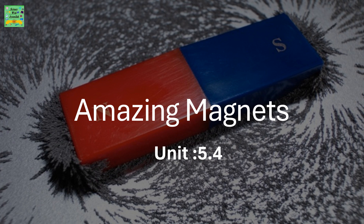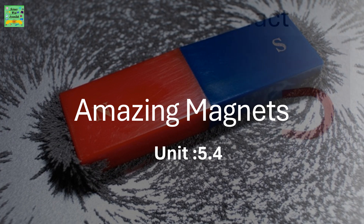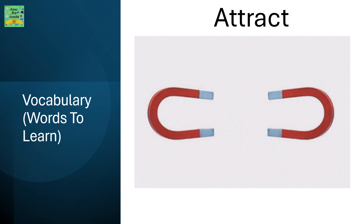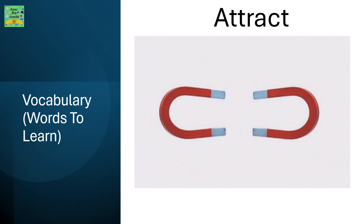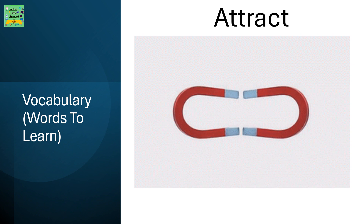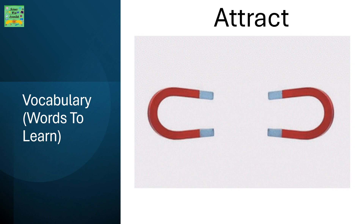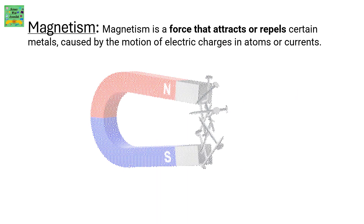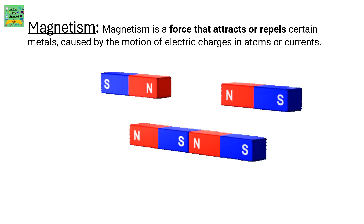Amazing Magnets, Unit 5.4 vocabulary words to learn. Attract: when two magnets come close to each other they are being attracted by each other. Magnetism is a force that attracts or repels certain metals, caused by the motion of electric charges in atoms or currents.